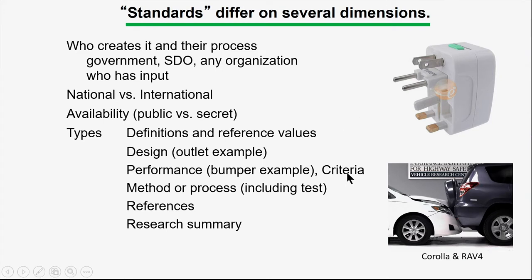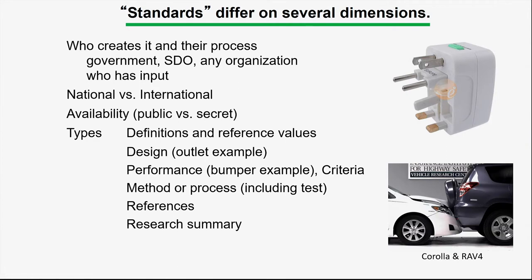Performance criteria is where you specify not the physical dimensions of an object, but how well it performs. One would argue this is not a good case for a performance specification, because in order for a collision to be avoided, the heights of the two bumpers need to be the same. Process examples are cases where you specify how something is made, verified, or checked. There are other standards that are simply lists of references — normally information reports — and some that are general summaries of the literature.